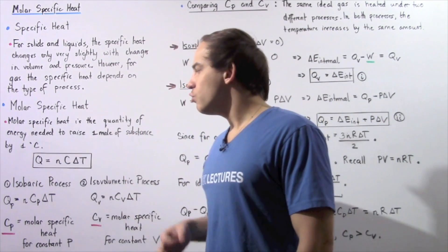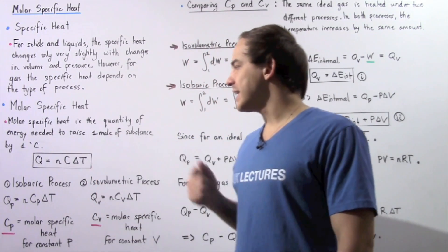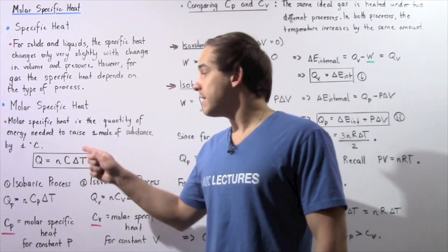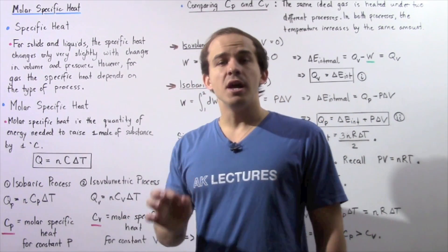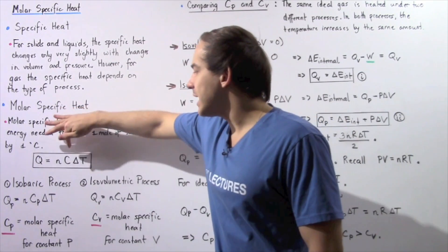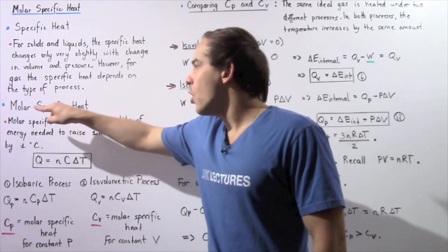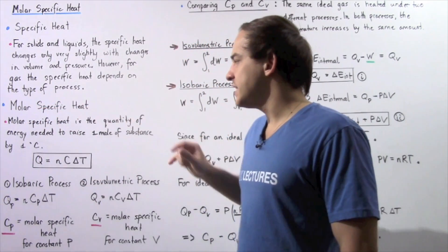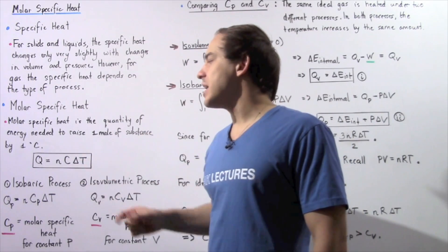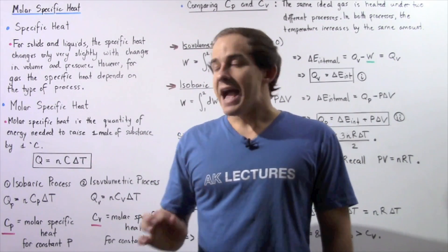Q, the amount of energy transferred, is equal to the product of N, the number of moles, multiplied by capital C, the molar-specific heat, multiplied by change in temperature.